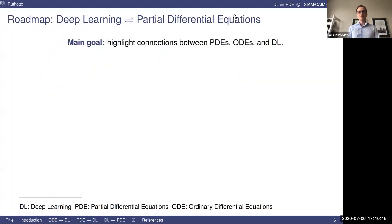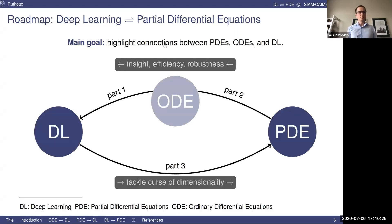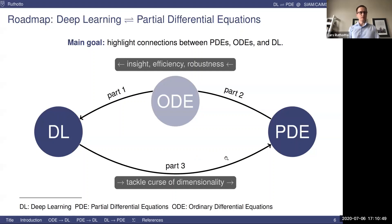The roadmap for my talk is as follows. My main goal is to highlight connections between PDEs, ODEs and deep learning. We will first make the connections from PDEs, bringing tools into deep learning — first going from ODEs to deep learning, and then adding a spatial dimension to end up with PDEs. Then in the last bit of the talk, we will go the opposite way and show how deep learning can tackle the curse of dimensionality and high-dimensional problems.